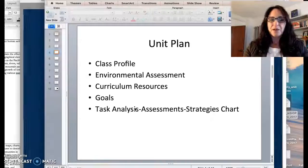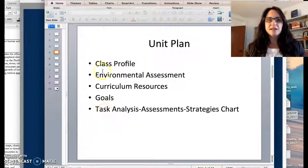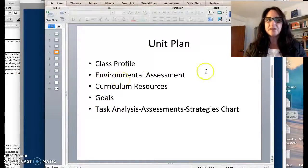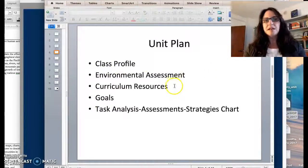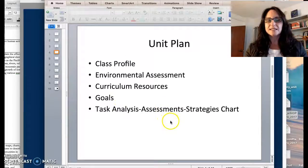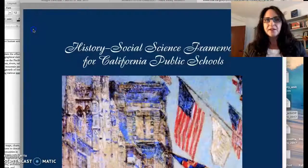How do we do that? Well, one way is to create a unit plan. In the unit plan there's these five major pieces: one is a class profile, another one's an environmental assessment, taking a look at the curriculum and resources, coming up with some goals, and then the task analysis, assessments, and strategies that you're going to use.